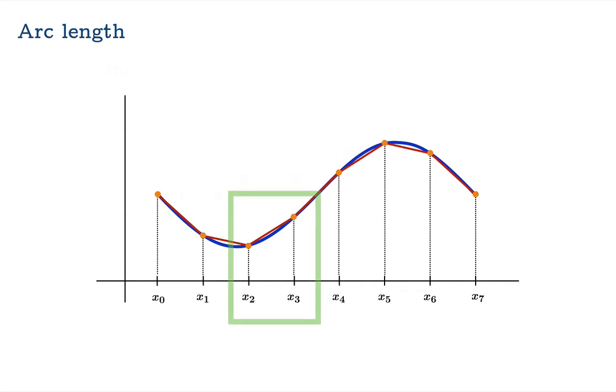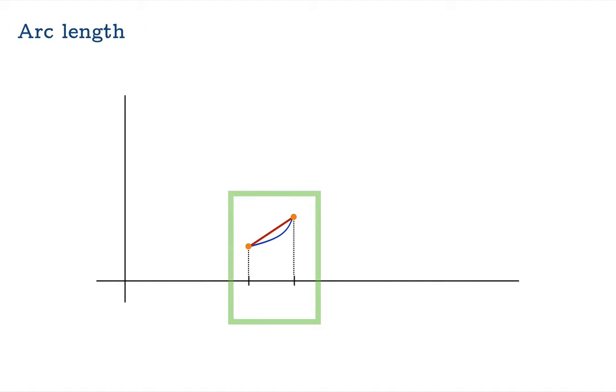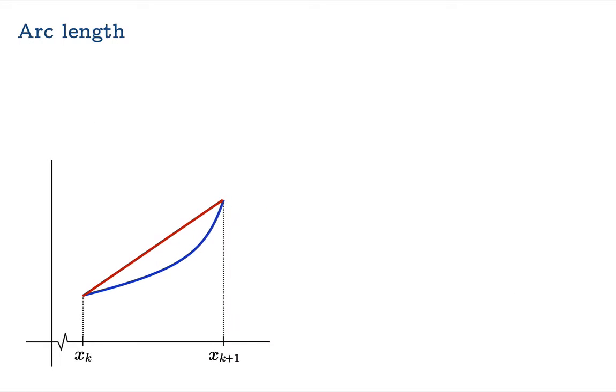Let's concentrate on one sub-interval and we'll sort of generalize once and for all the process. So let's say the endpoints of this sub-interval are called x sub k and x sub k plus 1. Now we're looking to calculate delta L, the change in length here, this little bit of segment that joins the endpoints.